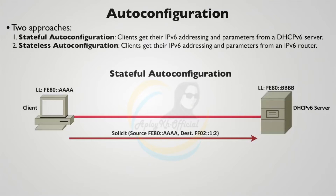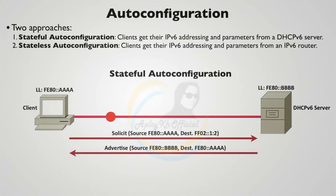We're sending out this multicast to this multicast group to ask if there's a DHCP version 6 server that can provide IP address information. The DHCPv6 server responds with an advertise message saying it is able to provide the requested information. Notice the source is the server's link-local address, sending back to the link-local address of the client.